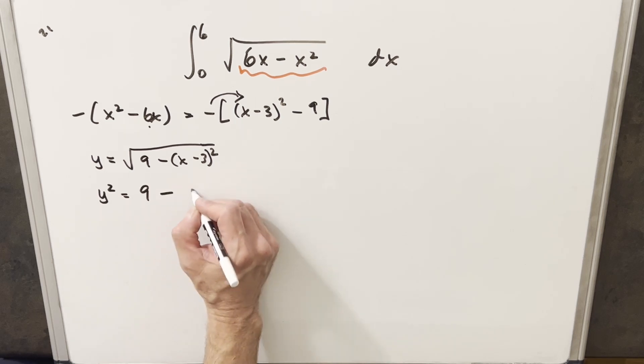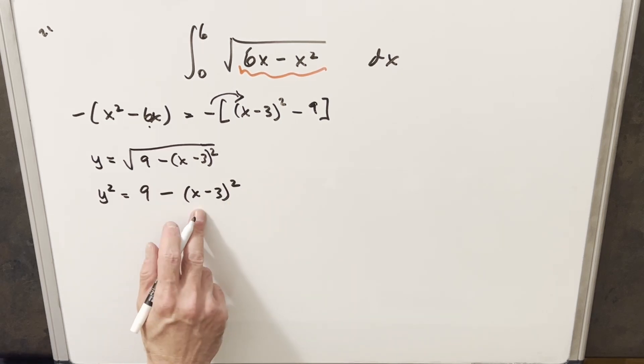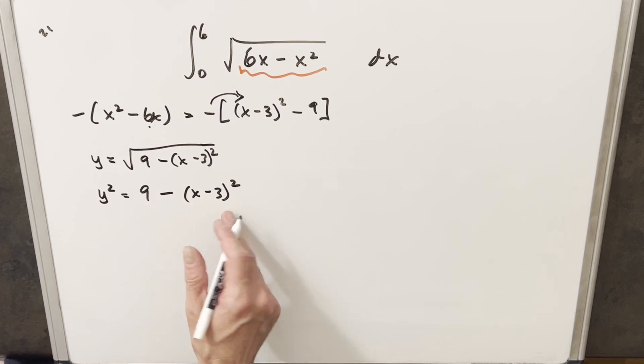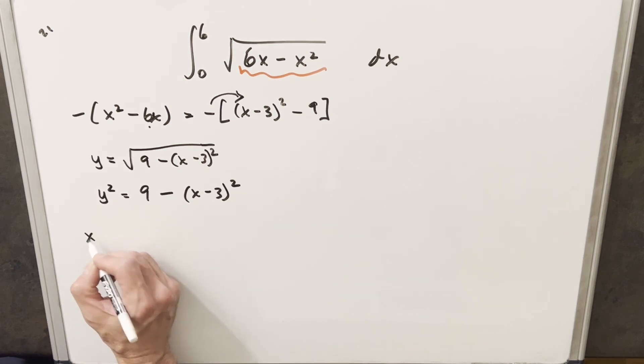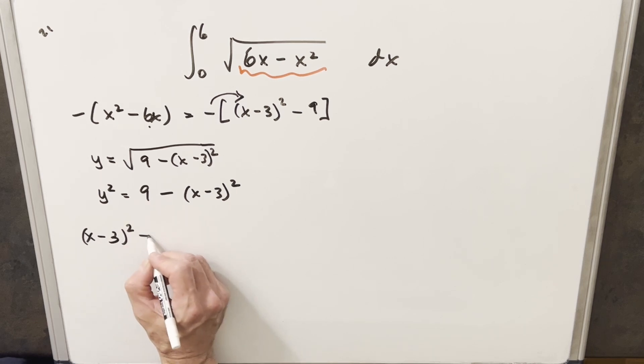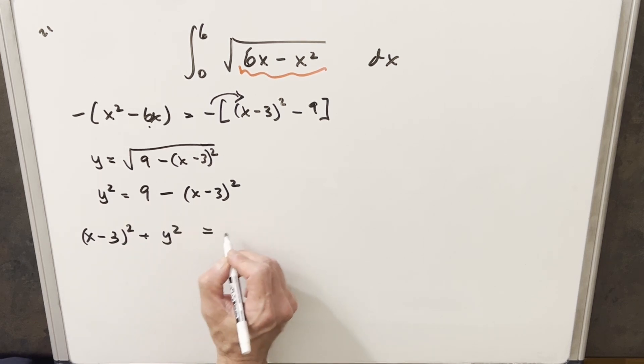On the right side, we're going to have 9 minus (x minus 3) squared. And then I can add this term, the (x minus 3) squared, on both sides. And we're going to end up with (x minus 3) squared plus y squared equals 9.